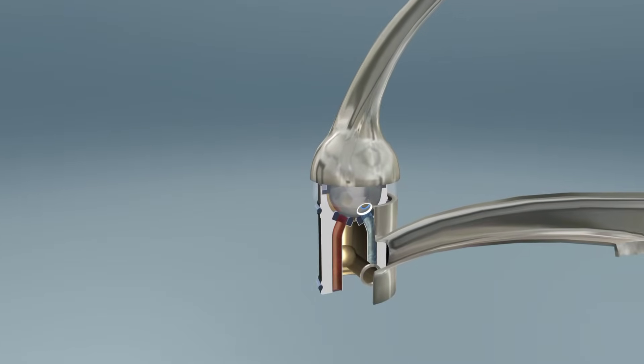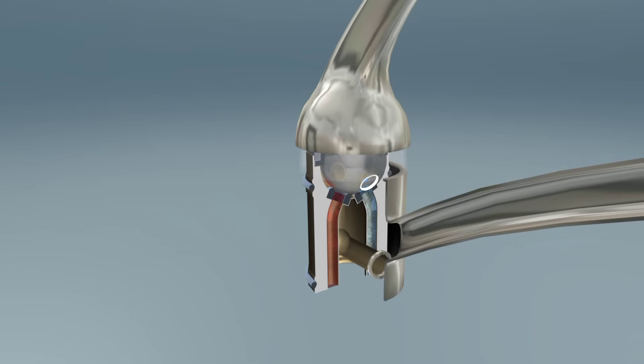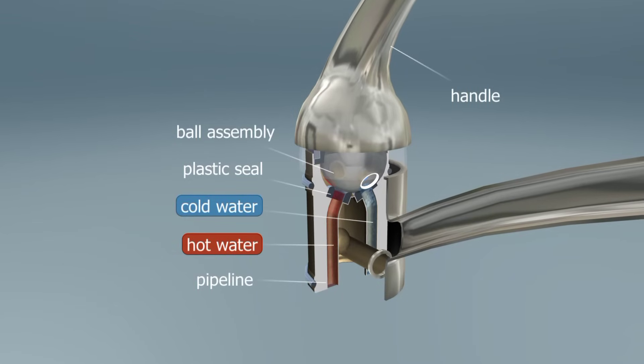In a single lever tap, the ball assembly is hollow, with three holes. Cold and hot water enter through these holes, and the mixed water flows out through the third one.